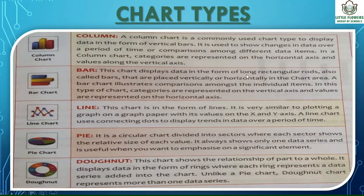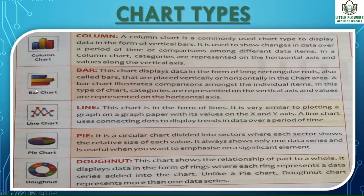Next is the bar chart. A bar chart displays data in the form of long rectangular rods shown horizontally. A bar chart illustrates comparisons among individual items. In a bar chart, categories are represented vertically and values horizontally. In contrast, in a column chart, categories are represented horizontally and values vertically.